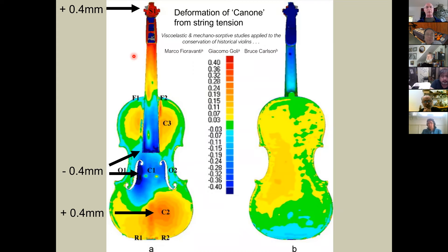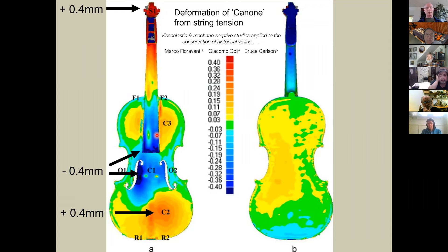Another serious study applied mechanosorptive creep analysis to the conservation of historical violins — specifically the Canone, the famous Guarneri del Gesù. The measurements showed about 0.4 mm of scroll being pulled up, the end of the fingerboard going down about the same amount, and approximately 0.4 mm deflection on the bass bar side. There was also 0.2–0.3 mm of deflection in other regions.